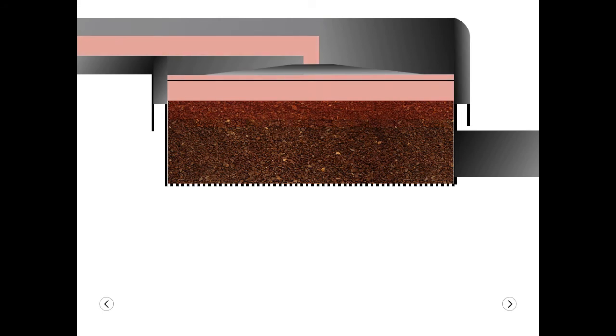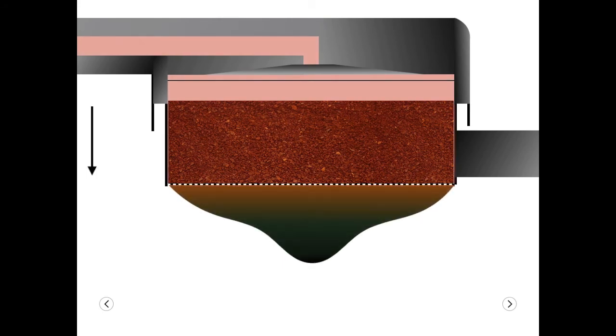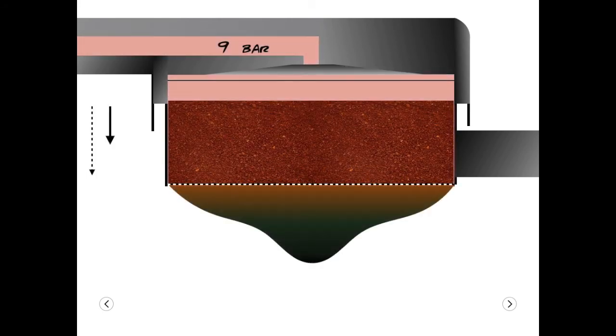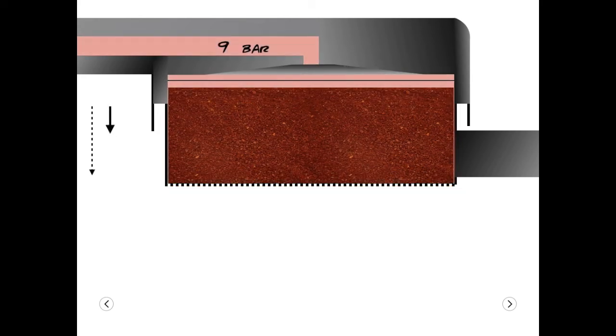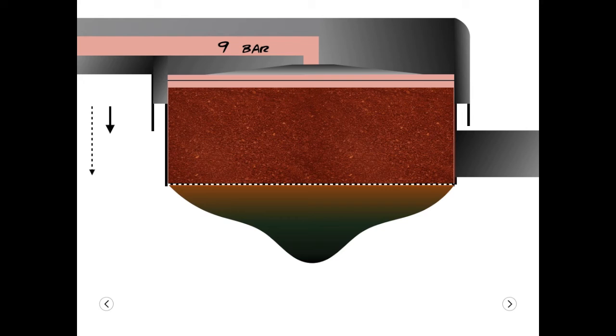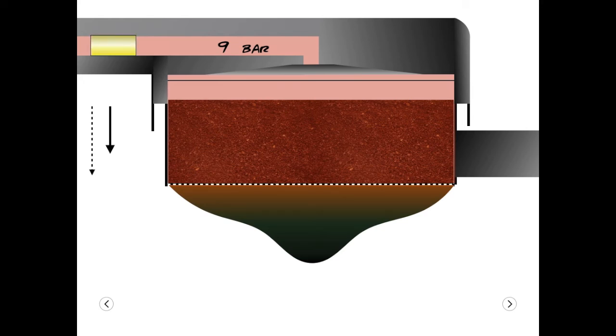There are six ways to reduce the flow rate through the puck. First, maintain dose but grind finer. Second, increase the dose. Third, use a restrictor to slow the flow.